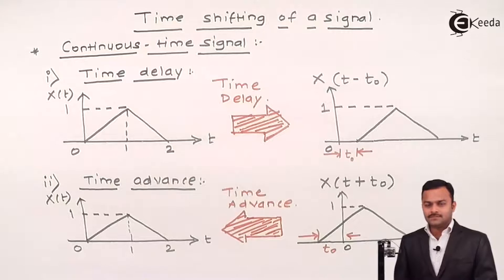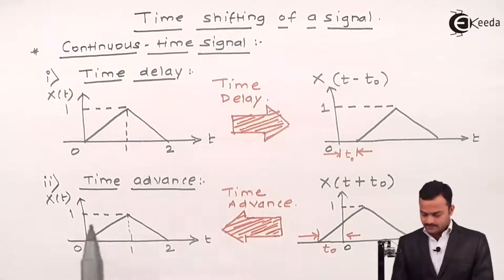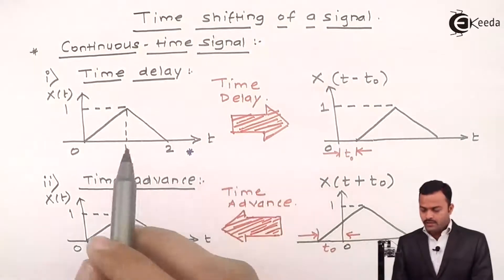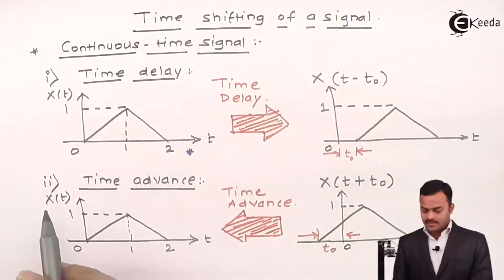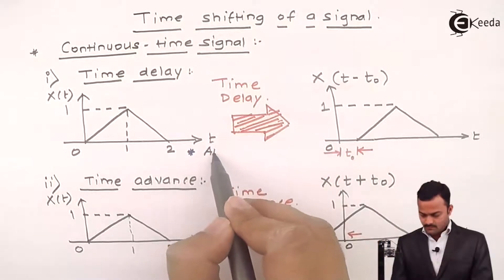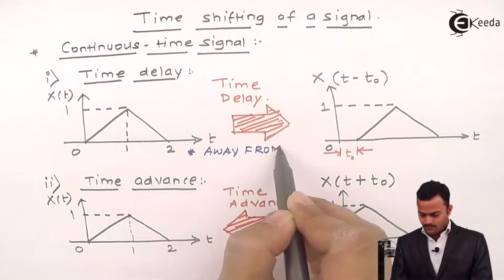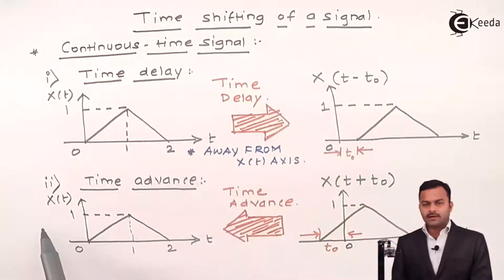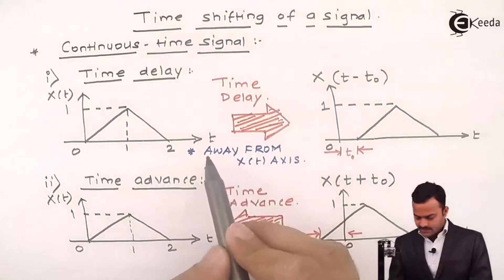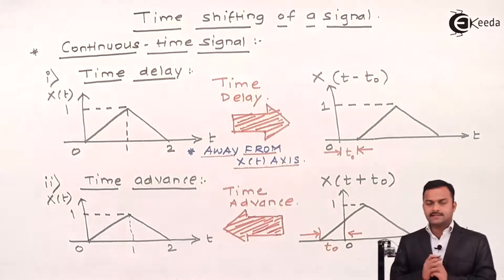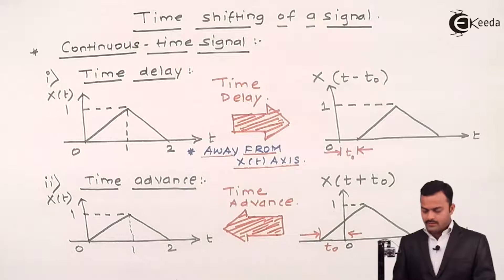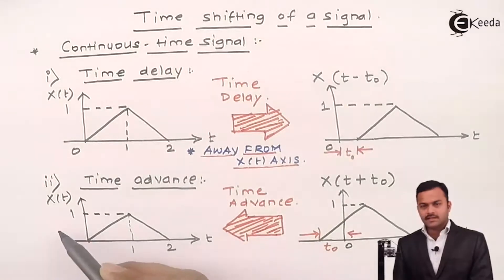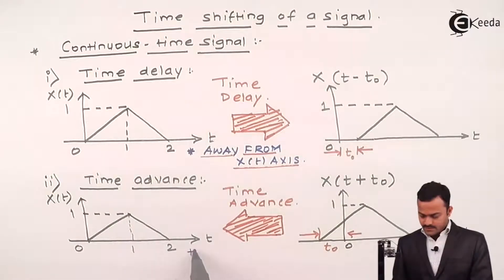Sometimes right and left will cause confusion, so we will make a thumb rule — a simple general concept. Time delay is nothing but the signal moving away from the y-axis, or you can say away from the x of t axis. If the signal is moving away from the x of t axis, that signal is time delayed. Similarly for time advance, the signal is moving towards the x of t axis — that movement we call advancement.